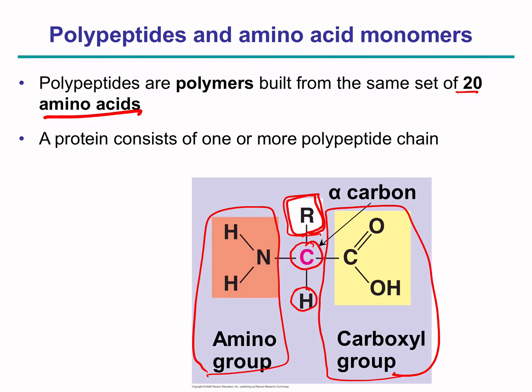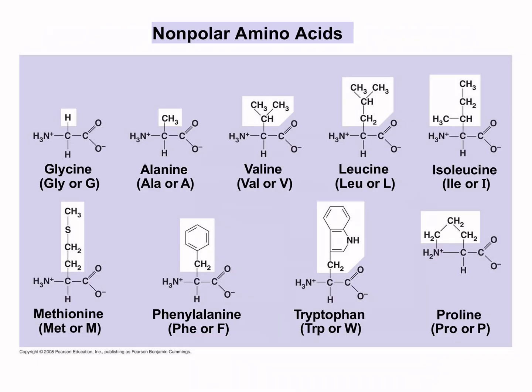For example, the R group of a particular amino acid could be nonpolar R groups, and therefore these amino acids are termed as nonpolar amino acids. The example is glycine, where the R group is just a hydrogen. You have alanine, where the R group is just a methyl group, and so on and so forth with valine, leucine, isoleucine, methionine, phenylalanine, tryptophan, and proline — all of them categorized as nonpolar amino acids.